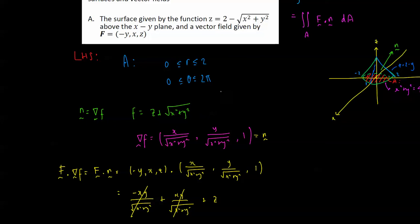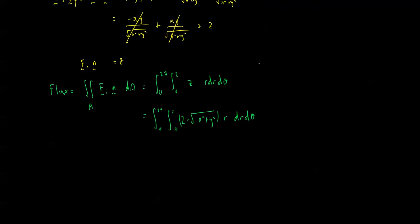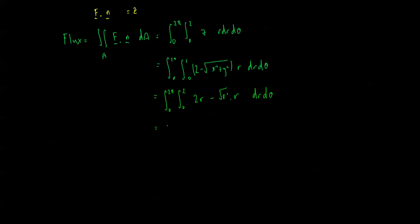We substitute x squared plus y squared equals r squared, which comes from the polar coordinate change: x = r cos θ, y = r sin θ. So the square root of r squared is just r. The integral becomes the integral from 0 to 2π, 0 to 2, of (2r minus r²) dr dθ. Expanding the brackets: the square root of r squared is r, giving us 2r minus r².